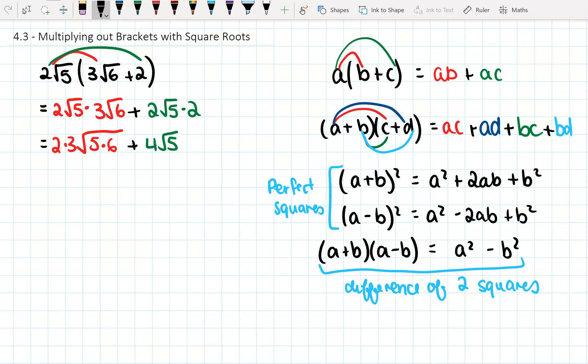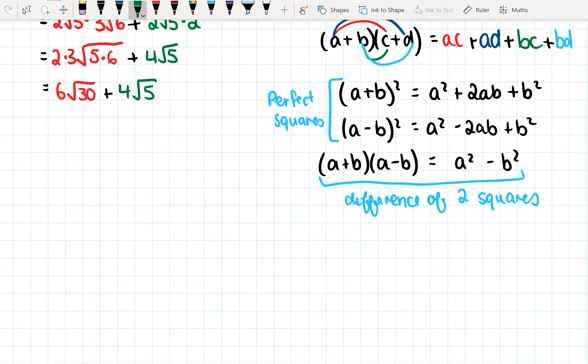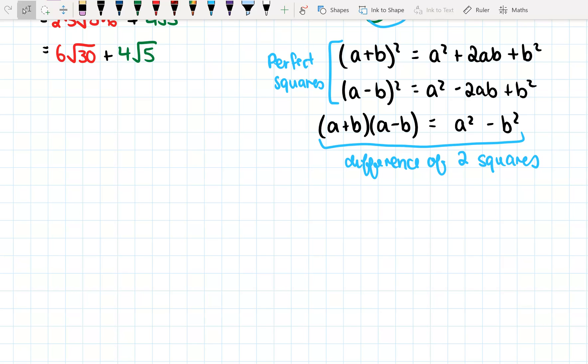Okay, so that second one we're done with now, we just need to simplify the first part. So 2 times 3 is 6, so we get 6√30 + 4√5. Okay, so that's simplifying if you just have a simple expansion of brackets. Alright, let's try one where we have an (a + b)², a perfect square.